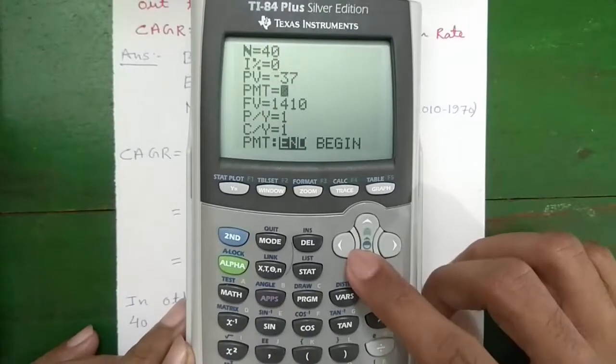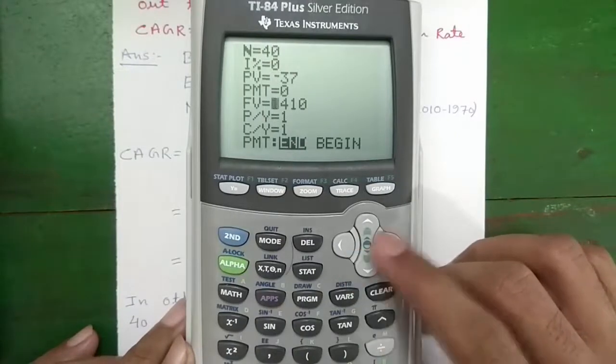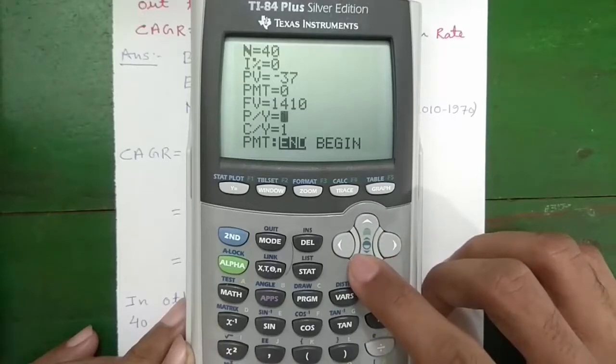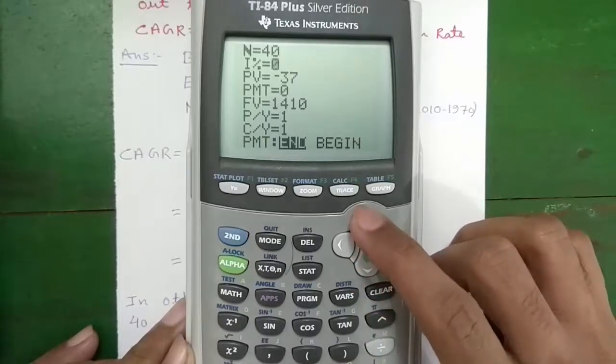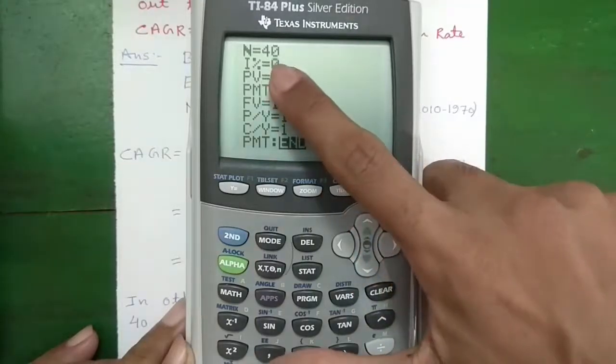PMT will keep as zero. FV will enter the ending value 1410. P/Y will keep default as one. C/Y will enter default as one.